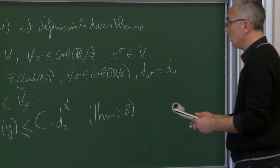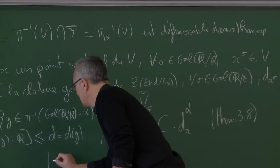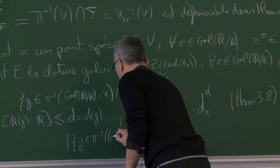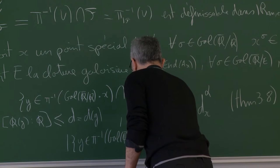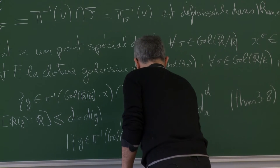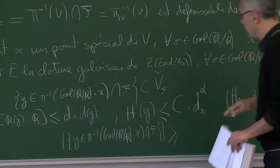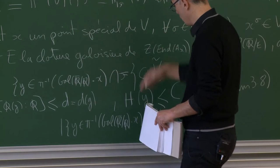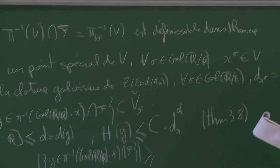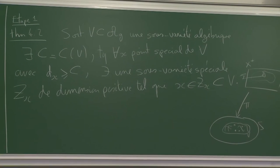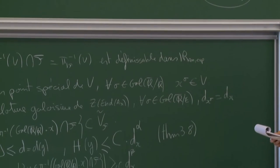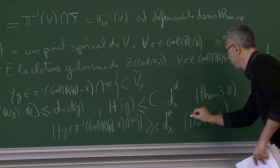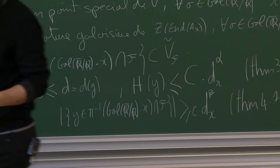Le cardinal de cet ensemble : comme c'est un ensemble fondamental, j'ai au moins autant de points en haut qu'en bas. Et en bas, j'ai vu que j'en avais une puissance positive du discriminant. C'est le théorème 4.1. Je suis tout à fait dans la situation du théorème de Pila-Wilkie.